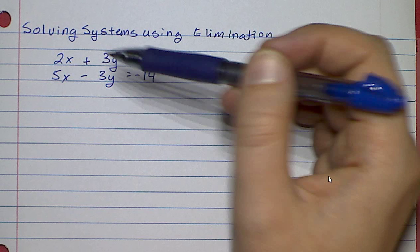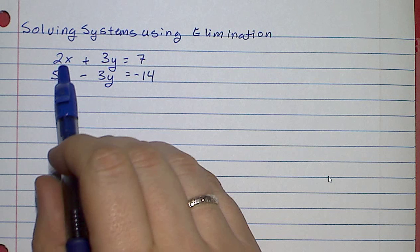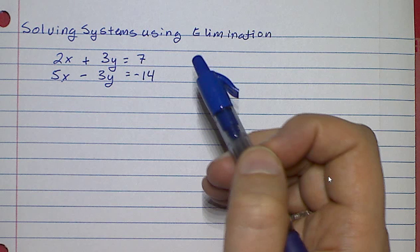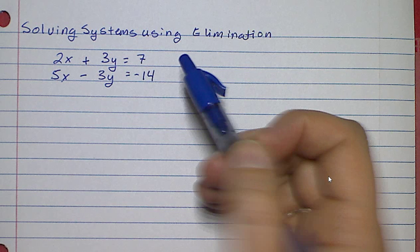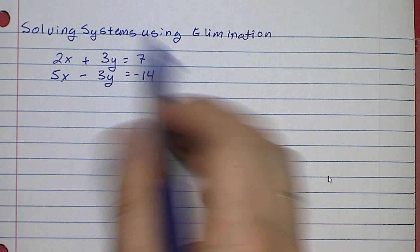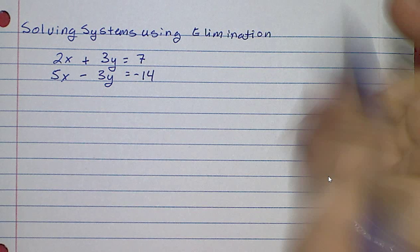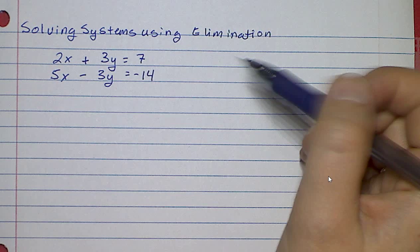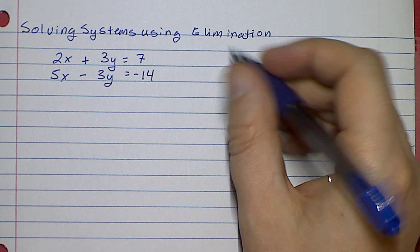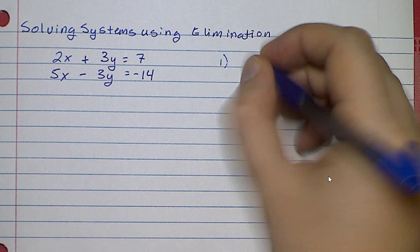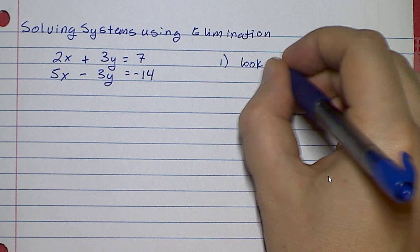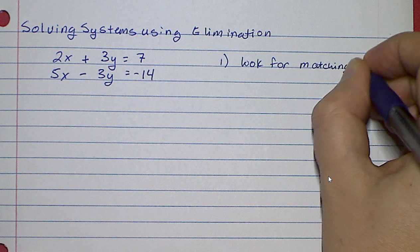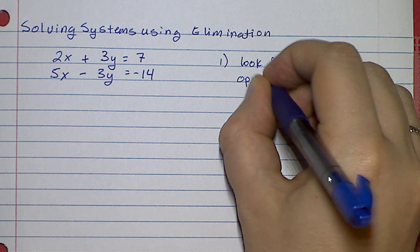Also, if you look at the coefficients of the variables here, you've got 2x, you've got plus 3y, you've got 5x, and you've got minus 3y. Is there a coefficient of 1 anywhere in here? No. So there's nothing that I've shown you so far that will allow you to do this. Elimination, however, is a completely different way of thinking about how these two equations interact. Step number one is you look for either matching or opposite coefficients.